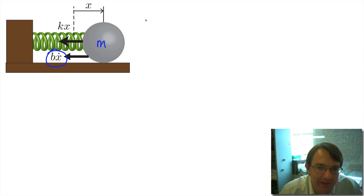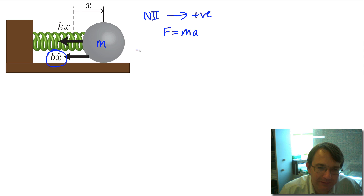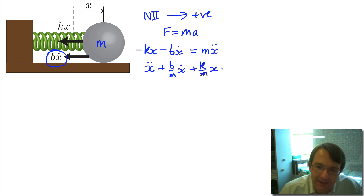To find the position of the mass as a function of time, we start with Newton's second law, defining the direction to the right as positive. Both forces act to the left, so both are negative. Starting with F = ma, the total force is minus k times x (the spring force) plus minus b times x-dot (the damping force), and this equals m times x-double-dot. Rearranging, we get: x-double-dot plus b/m times x-dot plus k/m times x equals zero. This is the differential equation we need to solve.